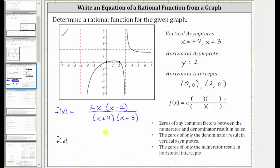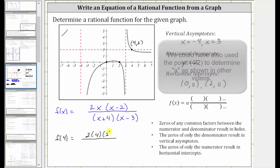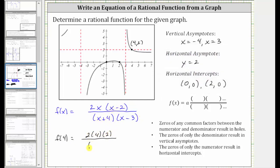And just to make sure this is correct, let's pick one point on the function to make sure it does satisfy this equation. Let's go ahead and select this point here where the ordered pair is four comma two. Let's make sure f of four is equal to two. So f of four is equal to two times four, and then four minus two is two. In the denominator, we'd have four plus four, which is eight, and then four minus three is one. Simplifying, we have 16 divided by eight, which is equal to two. Since f of four is equal to two, and our graph does contain the point four comma two, we can be assured our equation for the function is correct.